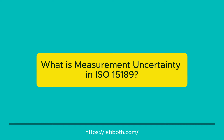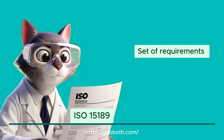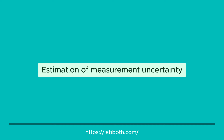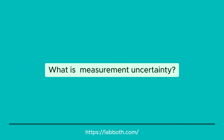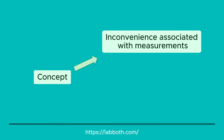What is Measurement Uncertainty in ISO 15189? ISO 15189 establishes a set of requirements to ensure the quality and reliability of results obtained from laboratory tests. These requirements include the estimation of Measurement Uncertainty. According to a formal definition, uncertainty can be conceived as a range of values associated with the result of a measurement where the true value can be found with a high probability. In other words, we cannot know the true value exactly.